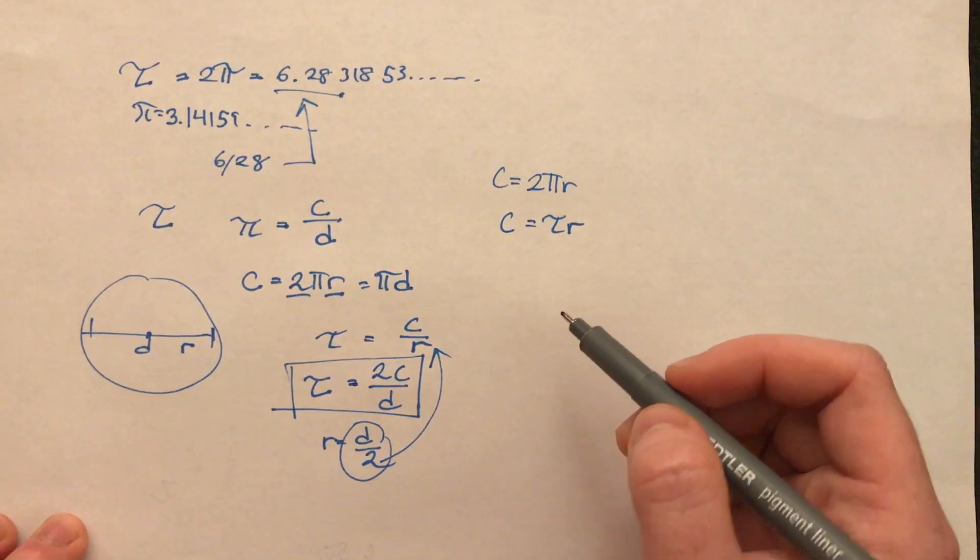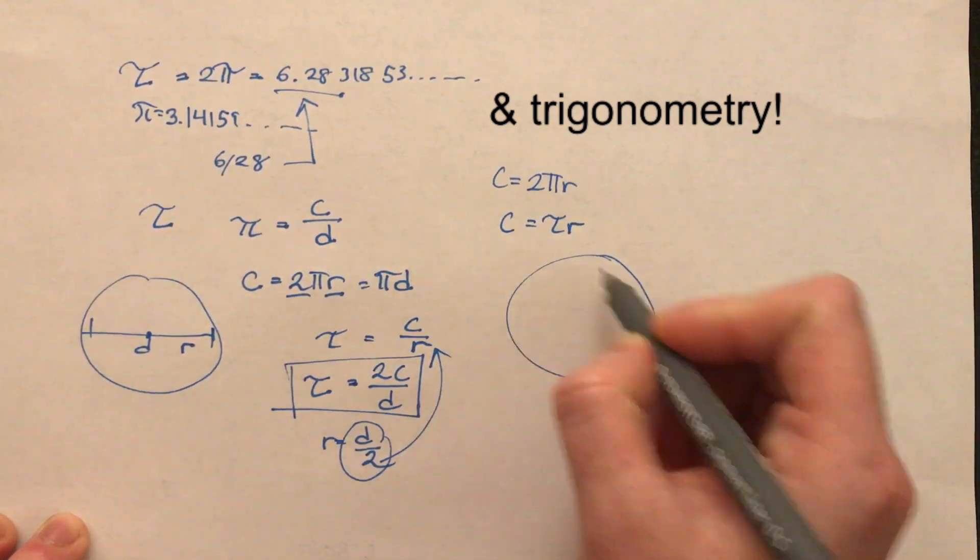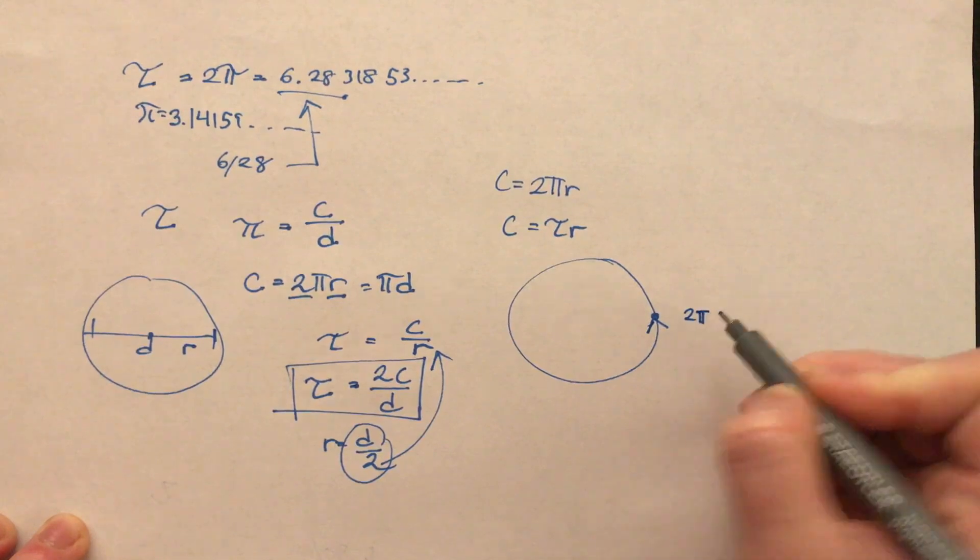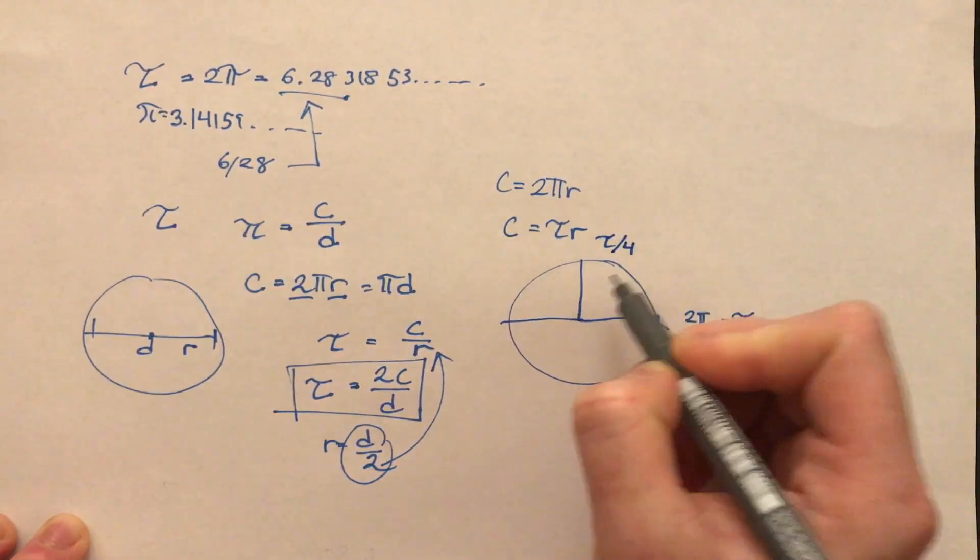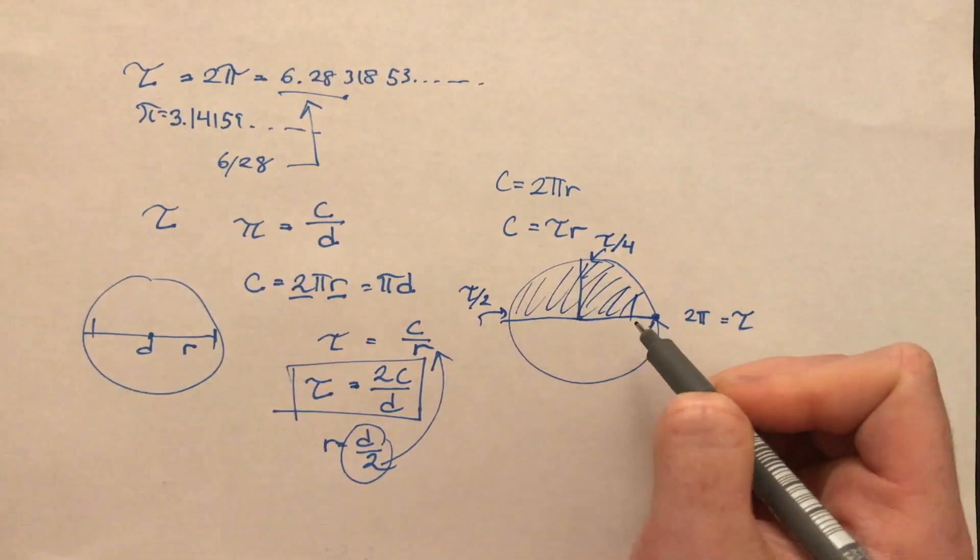Also, it makes it much easier to teach geometry, because if we look at a circle, we know that one round around the circle would be equal to 2 pi, but 2 pi is actually equal to tau. When we say tau over 4 is actually one quarter of the circle, and tau over 2 is actually equal to one half of the circle.